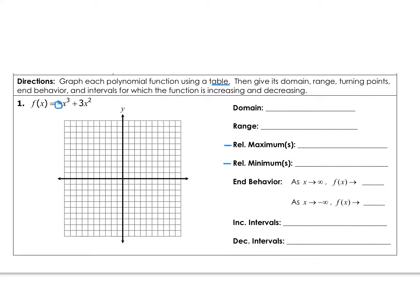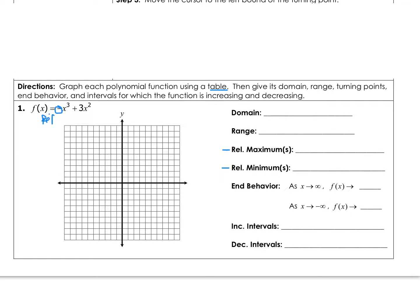Using what we know: the leading coefficient is negative, so it's going to reflect, and it's cubic so it's an odd function. Normally an odd function goes up as x increases and down as x decreases, but because of the negative it does the opposite — the left end should go up and the right end should go down. When you type it in and hit graph, that's exactly what you should see.